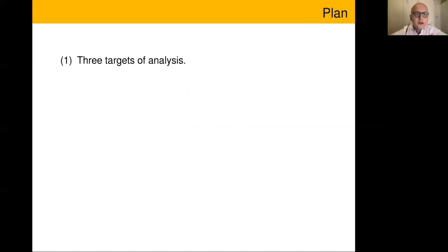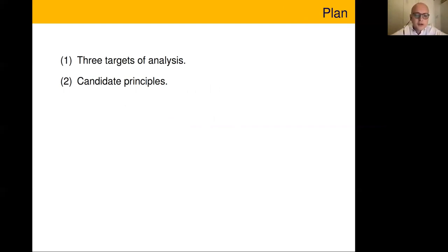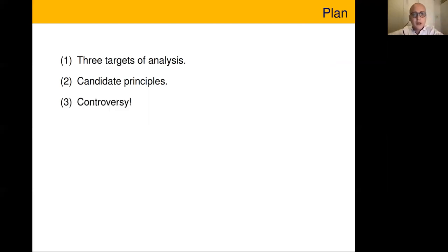Here's what I'm going to do. First, I'll give three different target analyses for somebody designing an epistemic logic — three different targets for what you're trying to achieve. Then I'll go through some candidate principles for such a logic, candidate validities. A popular way of judging whether you've got a good logic is to think about the principles you want and don't want relative to your target of analysis.